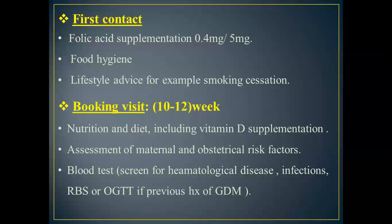In the first visit, we should prescribe folic acid to prevent neural tube defects. The dose for all pregnant women at low risk of neural tube defect is 0.4 milligrams. It should be started three months before pregnancy and continued through the first trimester.